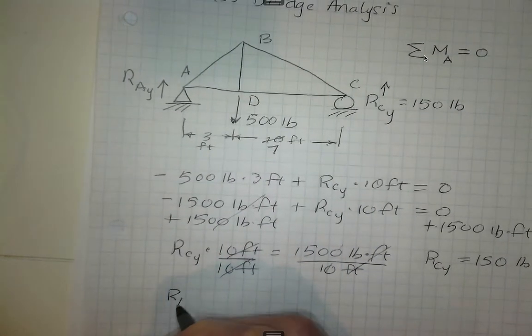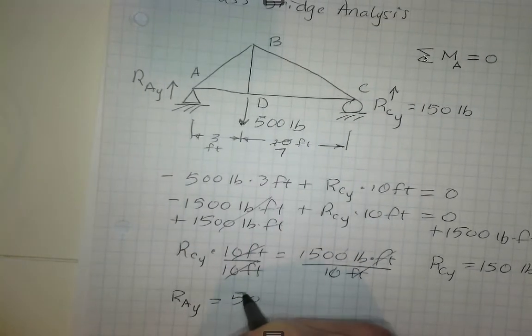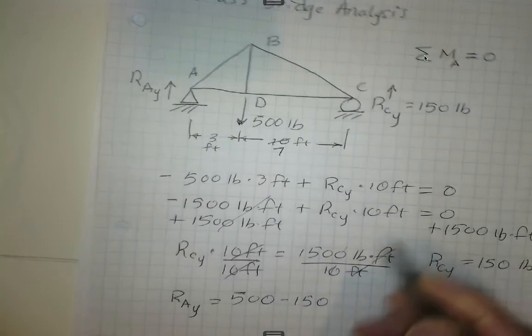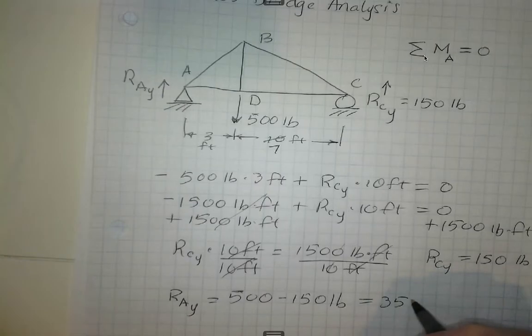So, therefore, the reactionary force at point A has to be the difference between the force pushing down and the force pushing up, or 350 pounds.